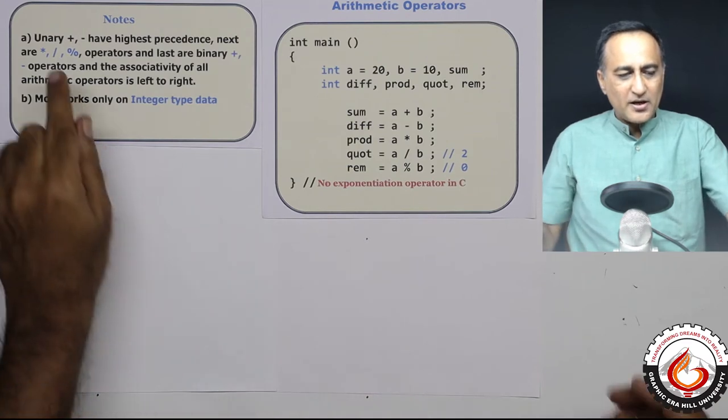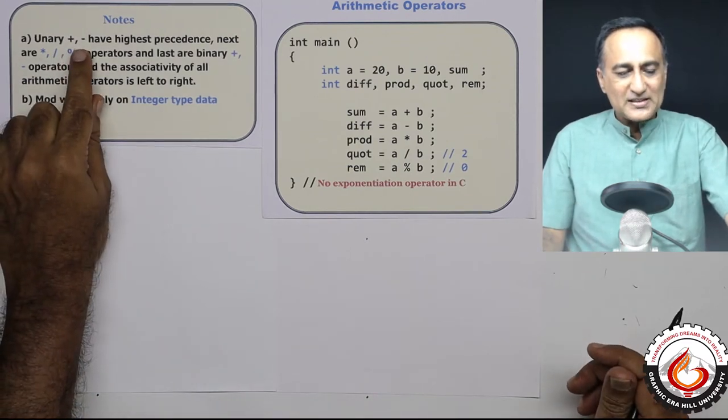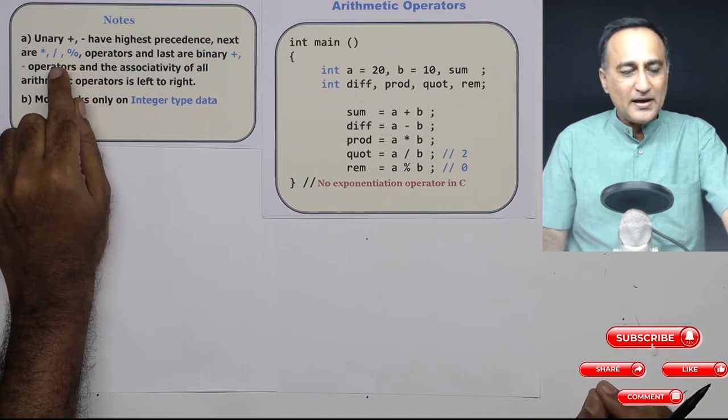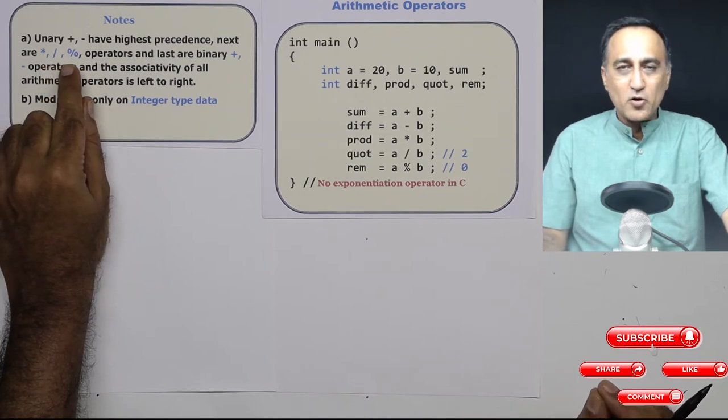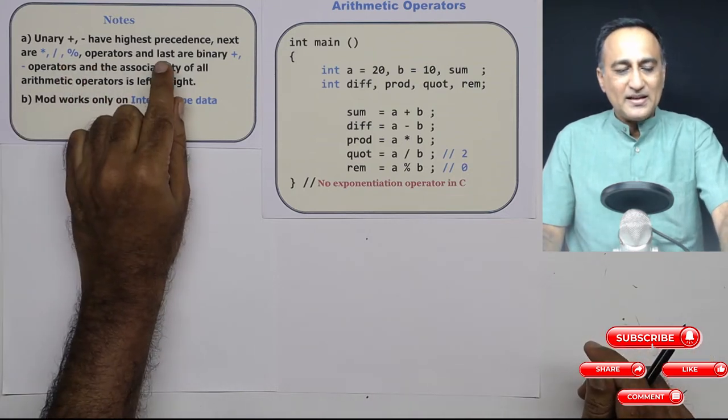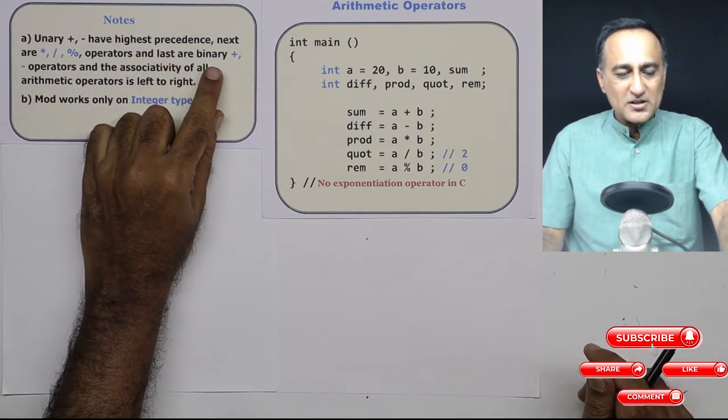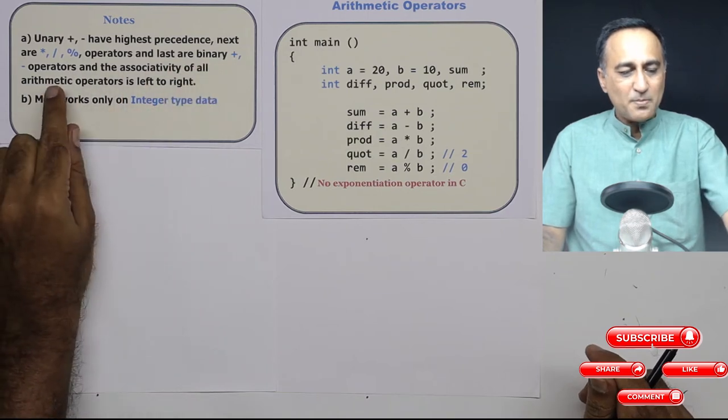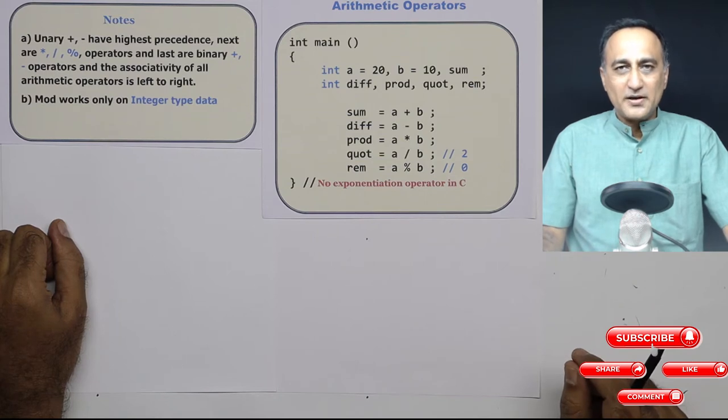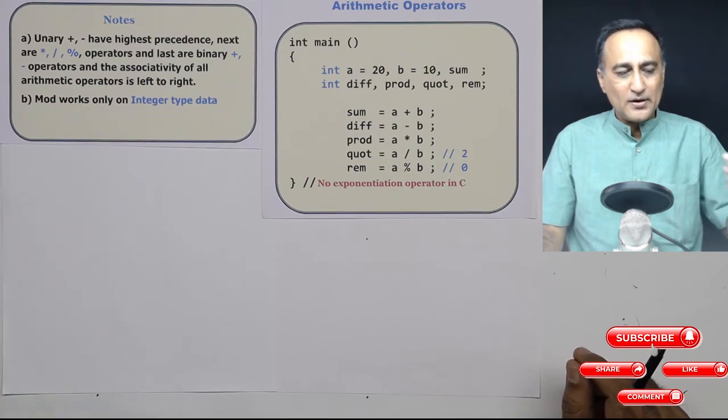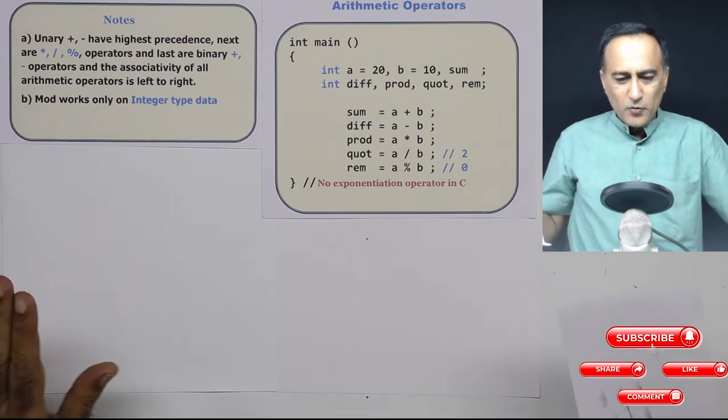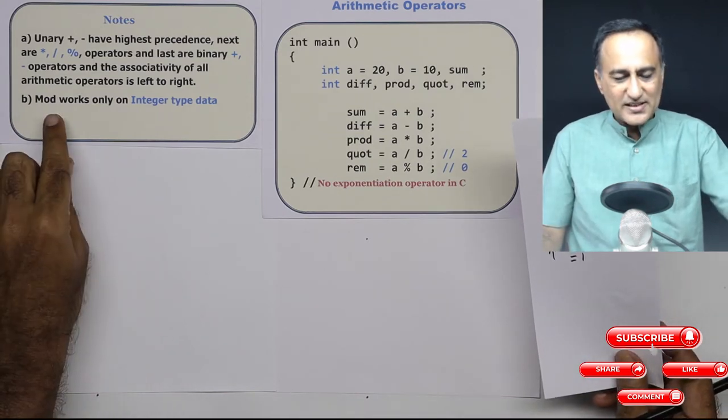Just like math, unary operators plus and minus have the highest precedence. This is followed by multiplication, division and mod which have the next equal precedence, followed by the lowest precedence, which is plus and minus operators. Most importantly, the associativity of all arithmetic operators is from left to right. So before we discuss this last point, let's take a look at this simple program.